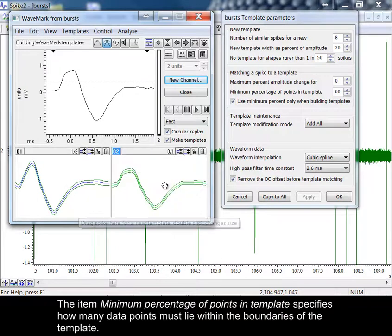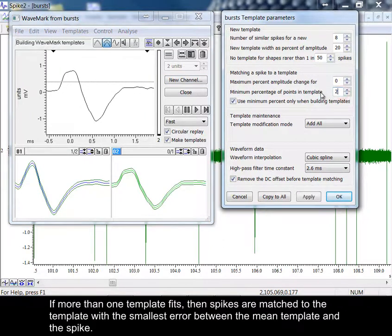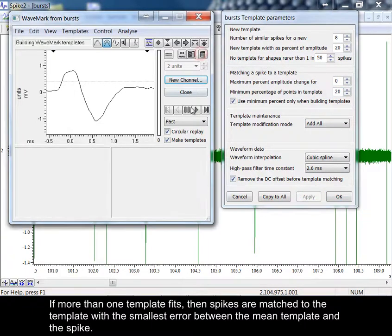The item minimum percentage of points in template specifies how many data points must lie within the boundaries of the template. If more than one template fits, then spikes are matched to the template with the smallest error between the mean template and the spike.